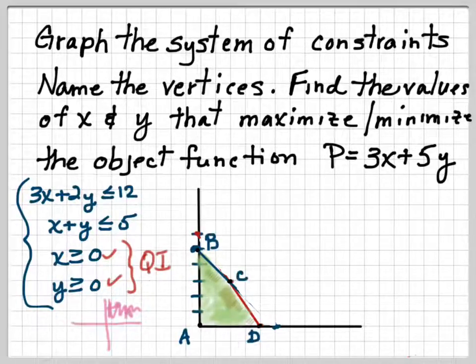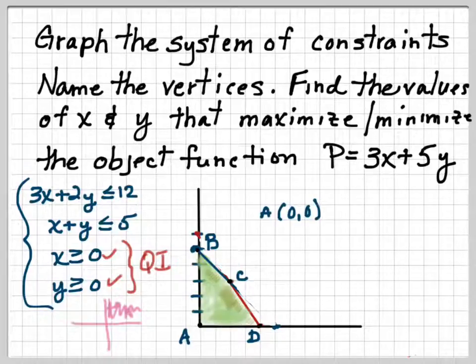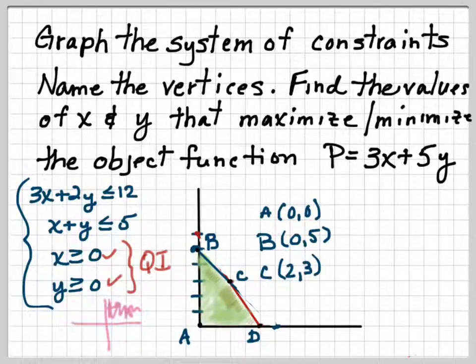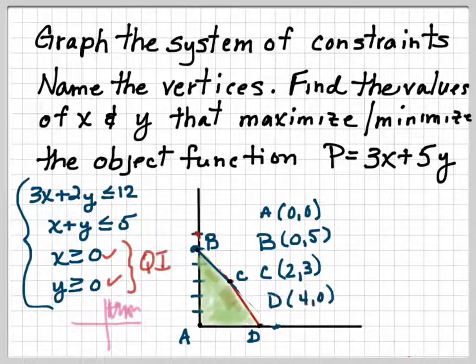So I'm going to identify my vertices, which is 1, 2, 3, 4 of them. And I have A is 0, 0, B is 0, 5, C is 2, 3, and D is 4, 0.